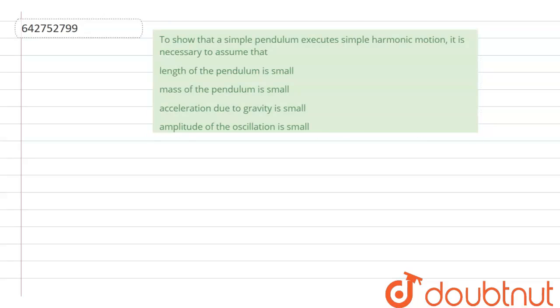Hello everyone, let's start the question. The question says that, to show that simple pendulum executes simple harmonic motion, it is necessary to assume that.